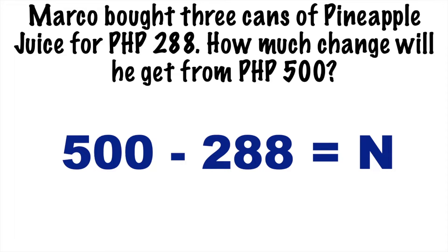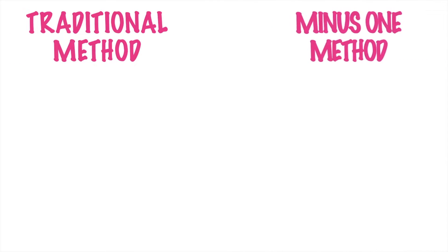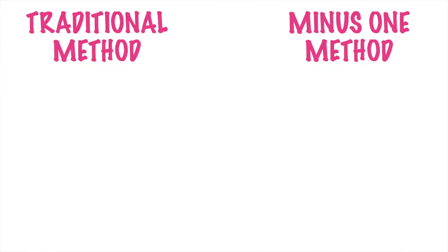In solving subtraction with zero difficulty, we have two strategies: the traditional method and the minus-1 method. Let's have first the traditional method.